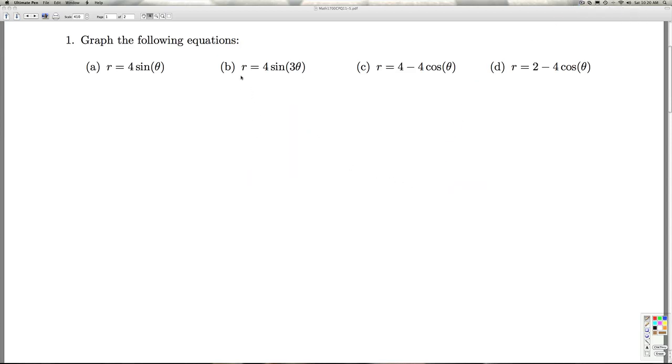Okay, and part B asks us to graph r equal 4 sine 3 theta. And so we'll see how that 3 is going to change things from what we had before. So thinking back to 10.5, what do we know what that 3 does? That 3 is the angular frequency, which means that this sine curve is going to go 3 times as fast as this one.